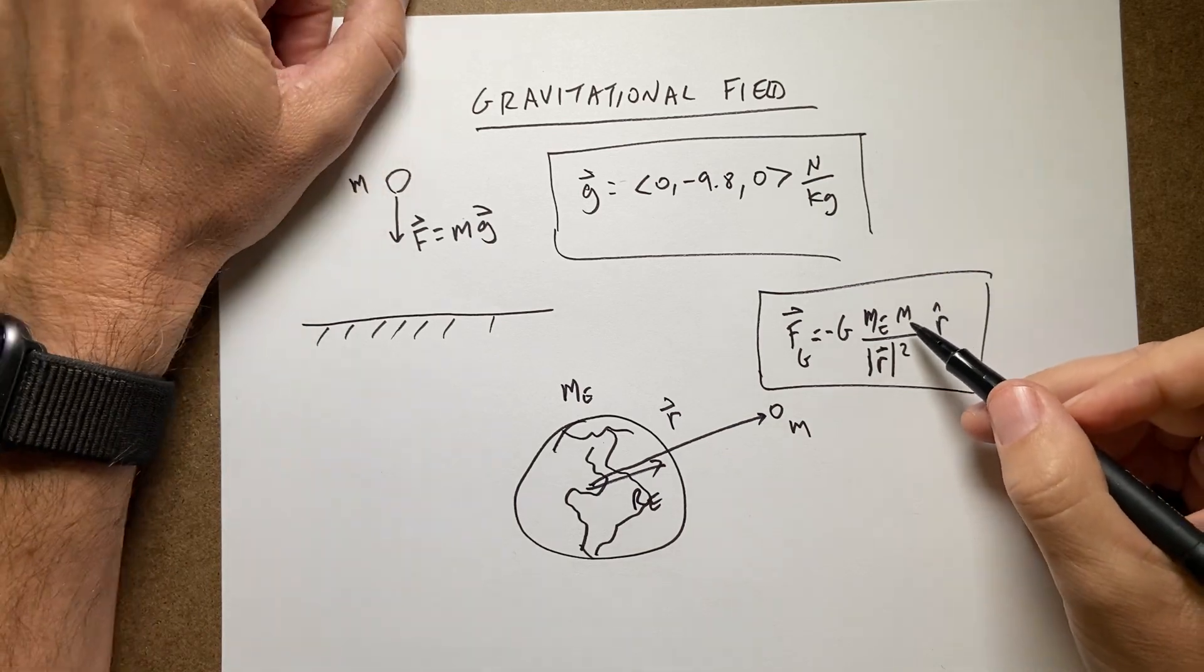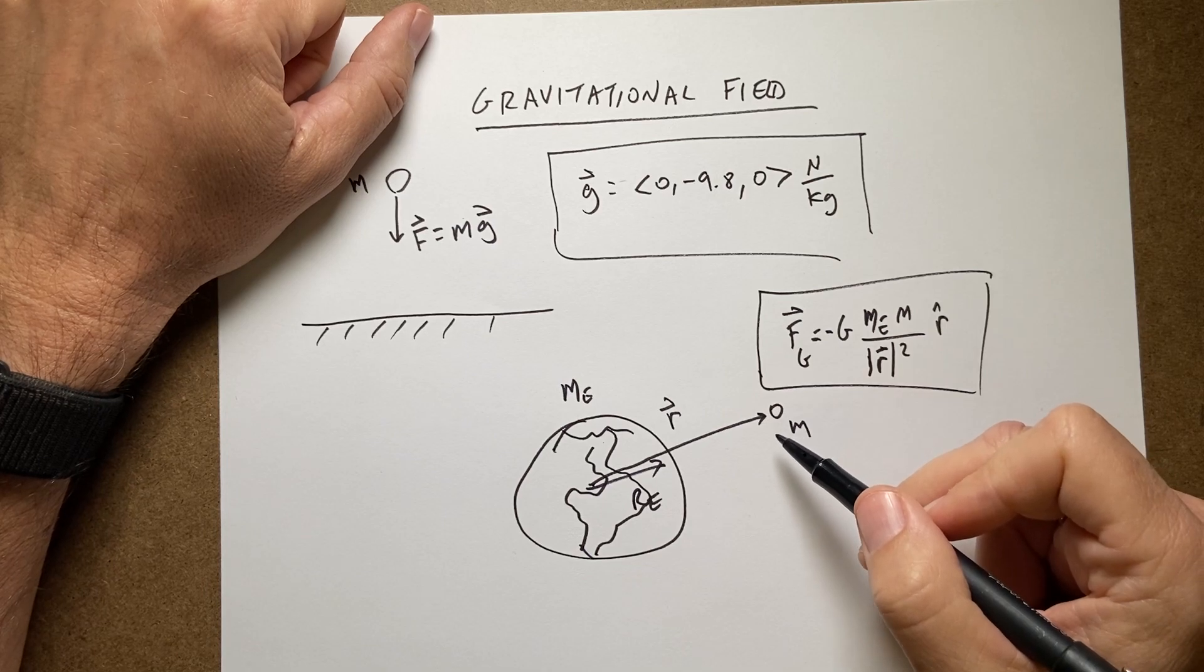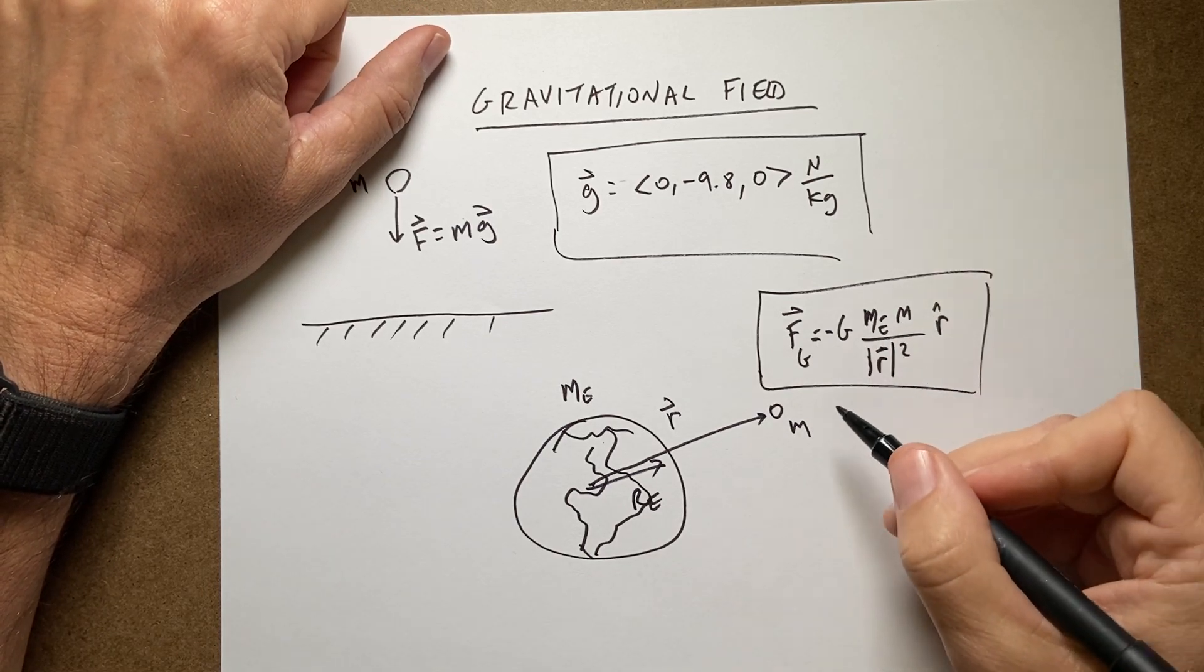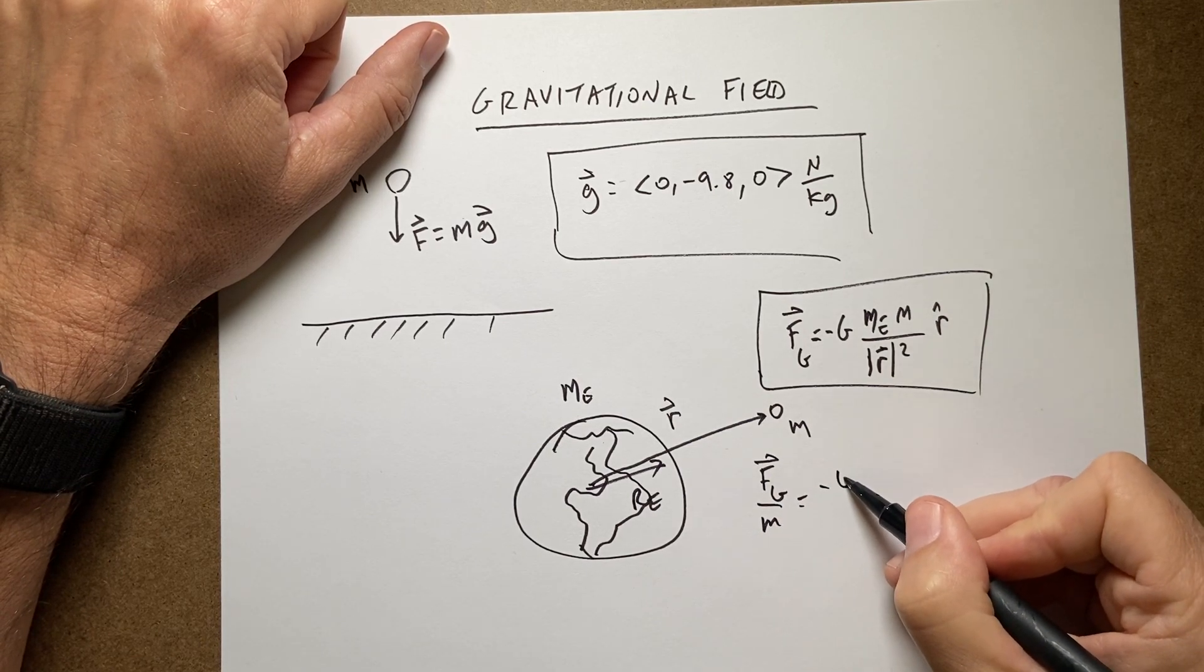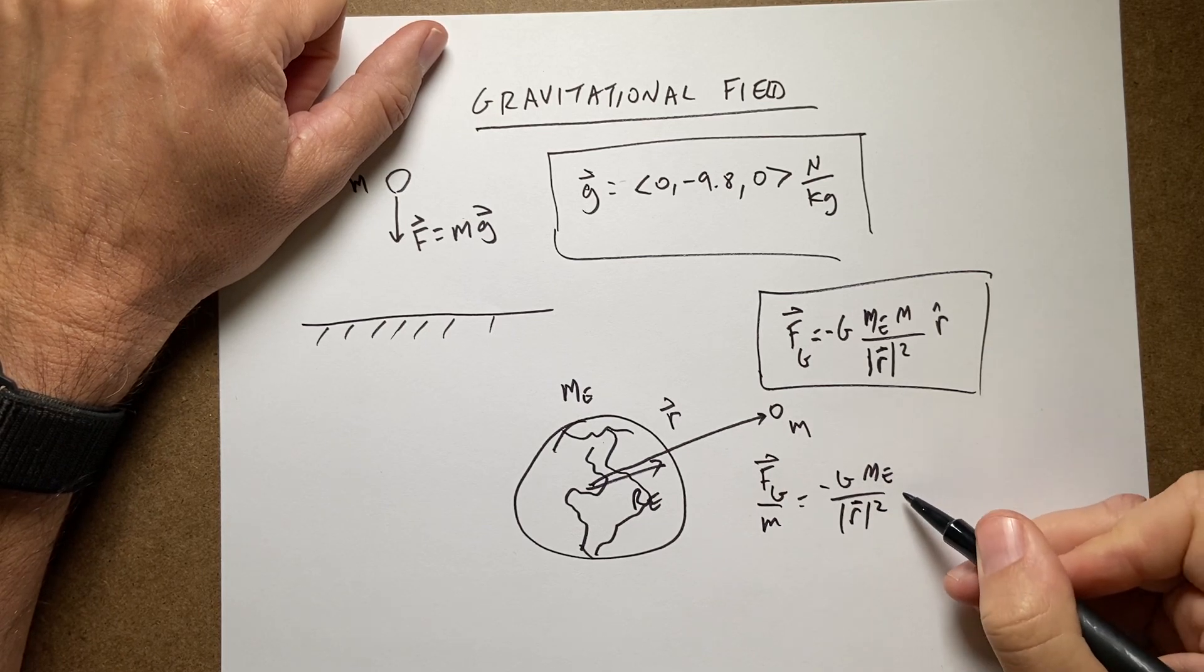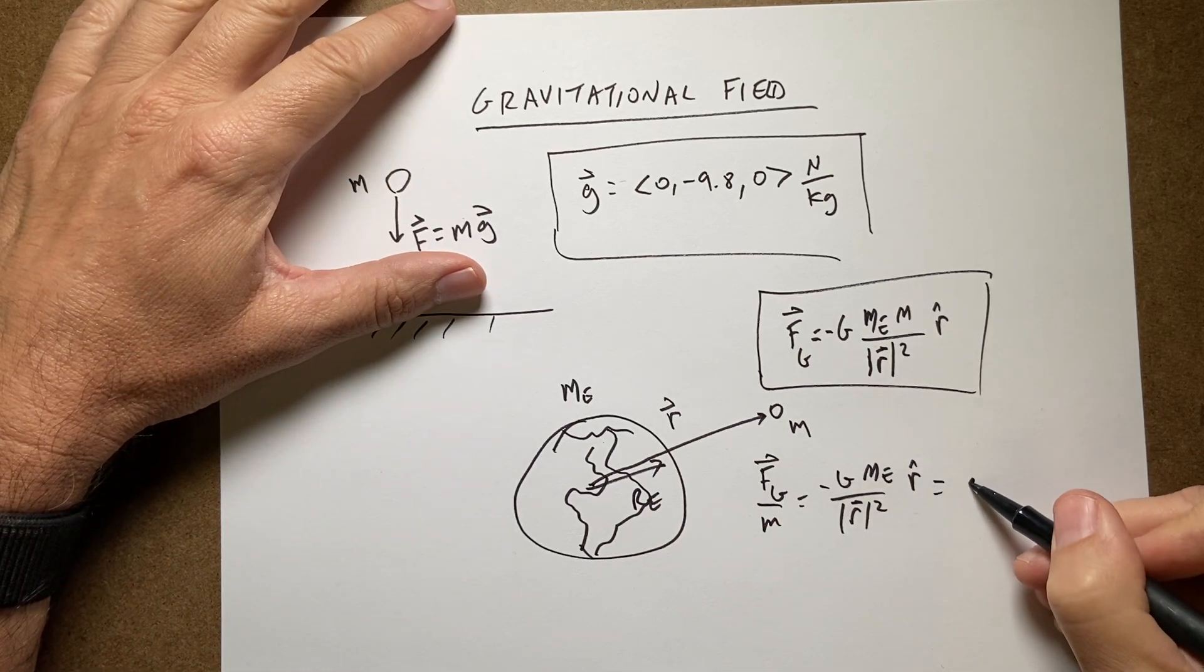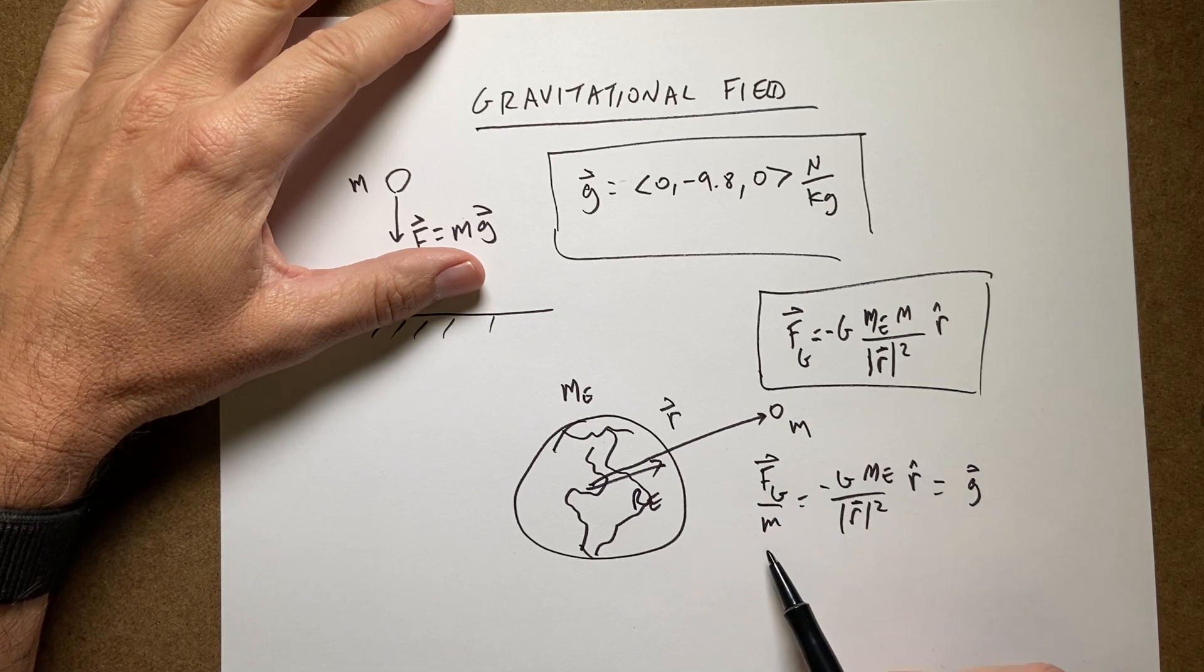But I don't really want that right now. So suppose I change the mass. I want to have this force per unit mass, F_g over m, would be negative G times M_e over r magnitude squared, r hat. Now, this is equal to g. This is the gravitational field, because I did the force per unit mass.